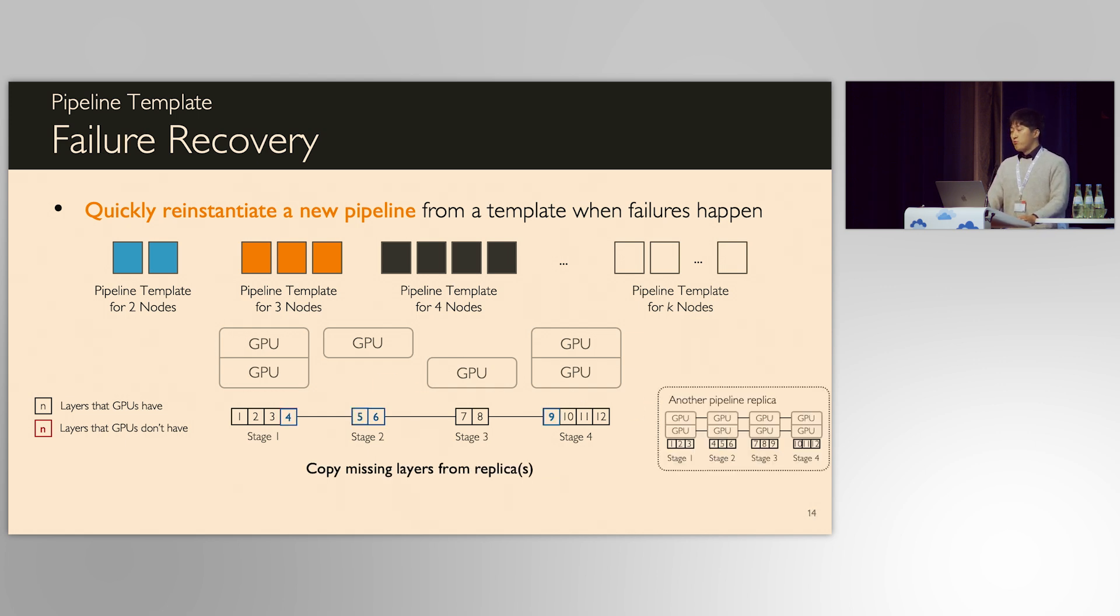Of course, after reinstantiation, some nodes still do not have some model layers, indicated as red boxes in the screen. Because we have other replicas in other machines, we can simply copy missing layers from them. Now, this pipeline is complete and can resume the training. Thanks to the pipeline template, which are pre-generated before, changing pipeline configuration can be done instantly.